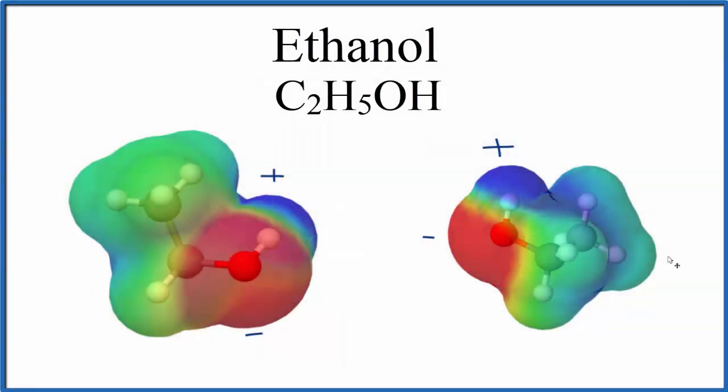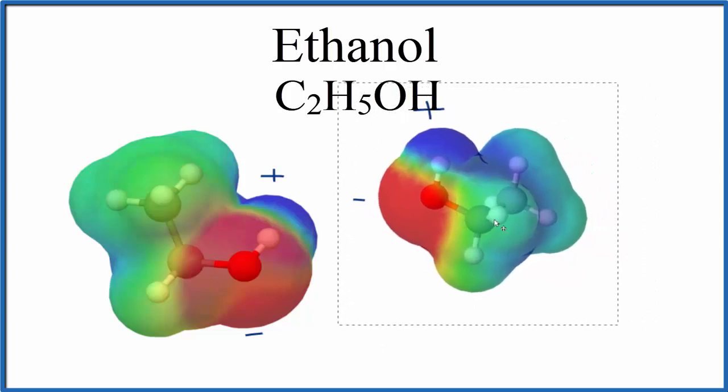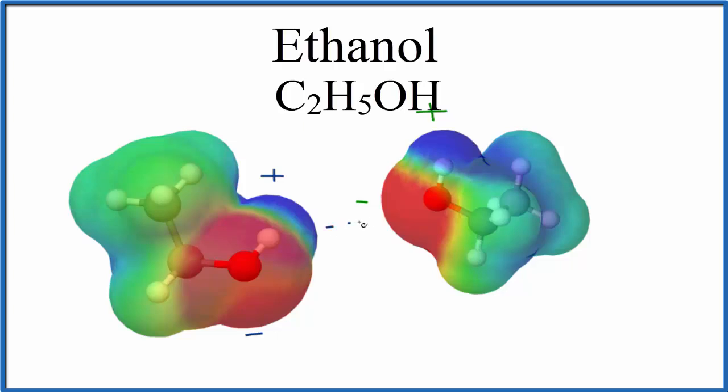So to recap, ethanol is a polar molecule. We have that positive by the hydrogen, the negative by the oxygen. And when two molecules come together, the positive and the negative can match up. And that's where we'll form that weak hydrogen bond.